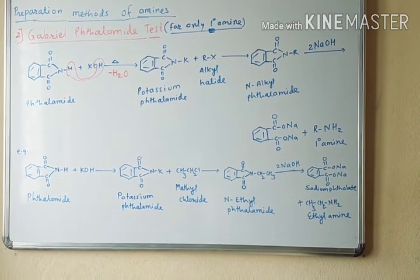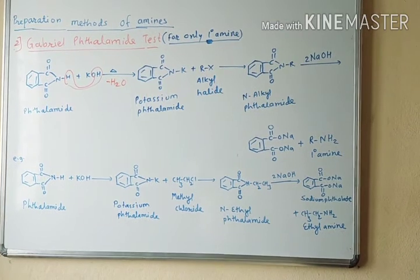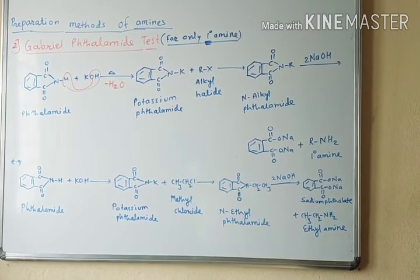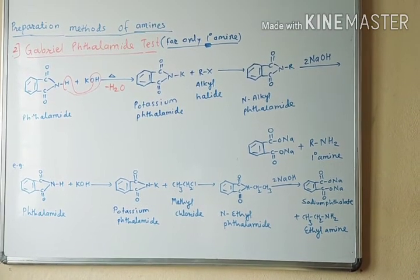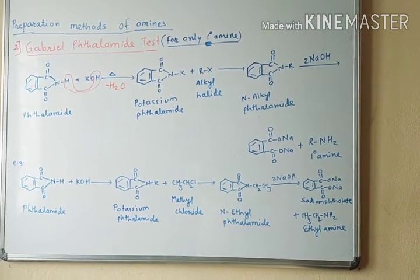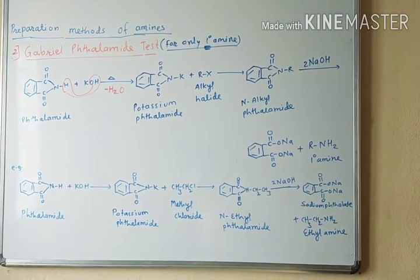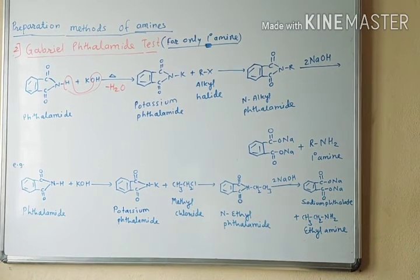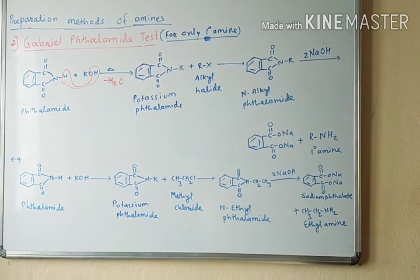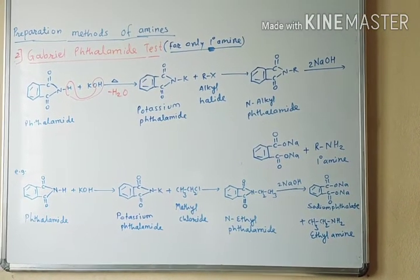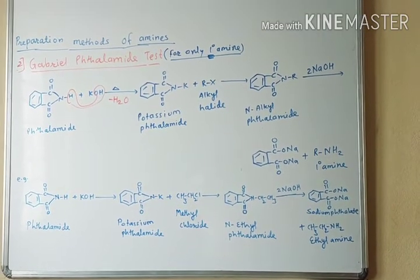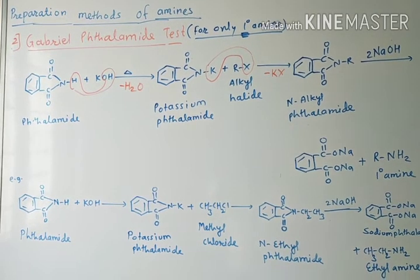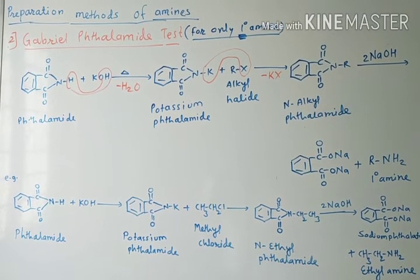This potassium phthalamide is further treated with alkyl halide. The potassium is replaced by the alkyl group, so there is formation of R, the alkyl group, attached to the nitrogen atom to form N-alkyl phthalamide. K and X are removed, and in place of K there is R.